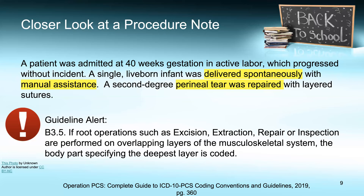There is a coding guideline that applies to this repair: if root operations such as excision, extraction, repair, or inspection are performed on overlapping layers of the musculoskeletal system, the body part specifying the deepest layer is coded. That is important for this second-degree tear because they are going through the skin down to the muscle, so the deepest layer — the muscle — is what we code.